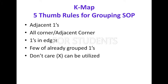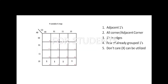For P.O.S., we apply the same rules but to zeros instead of ones. Now applying these rules with four variables: First rule — adjacent ones can be grouped. So I can group and make a single group, forming a quad. First rule is applied.